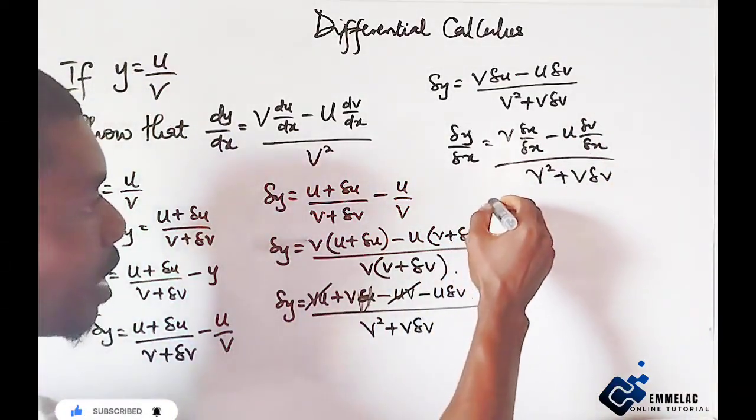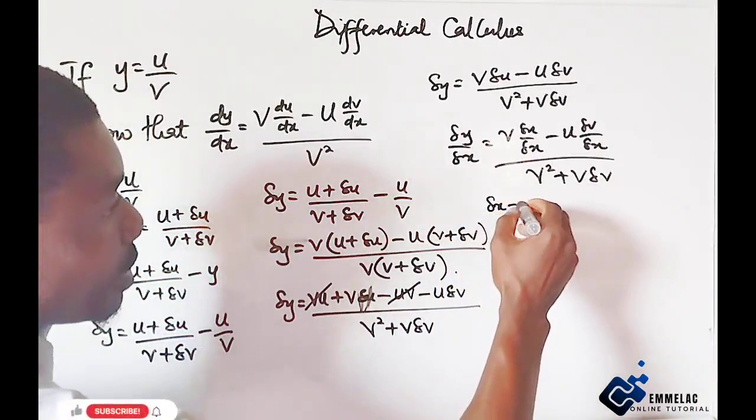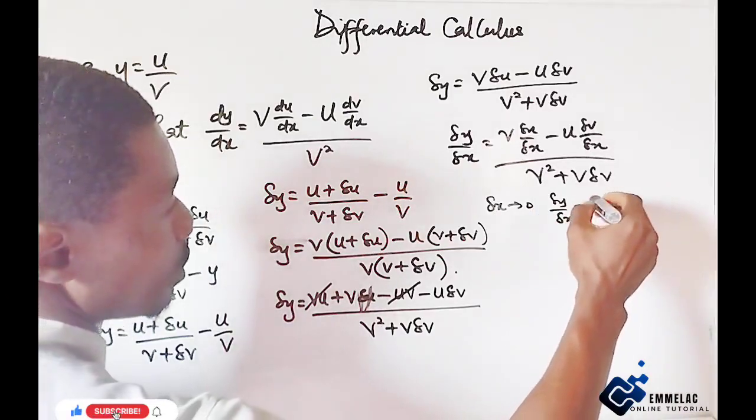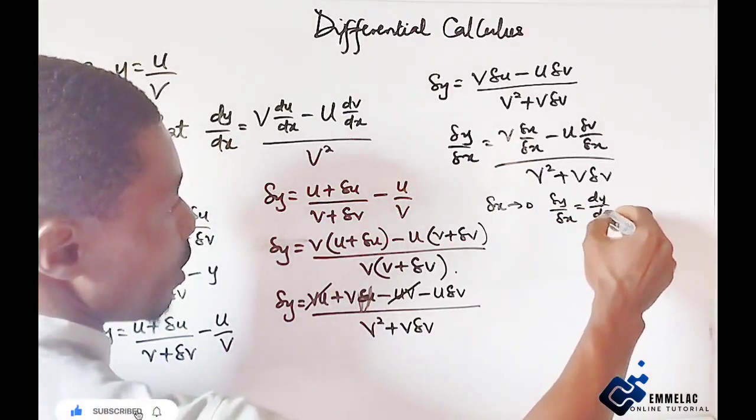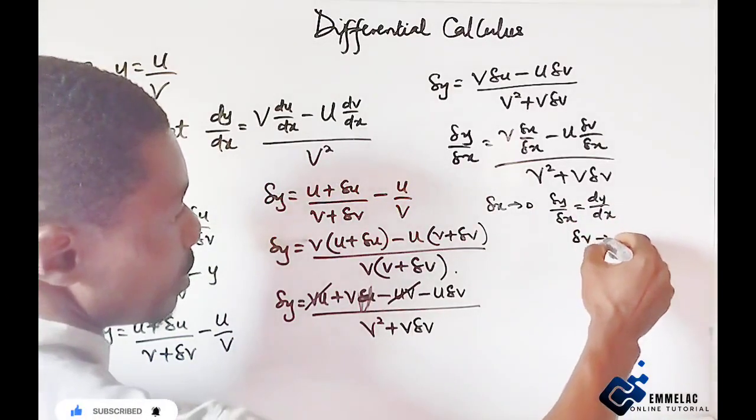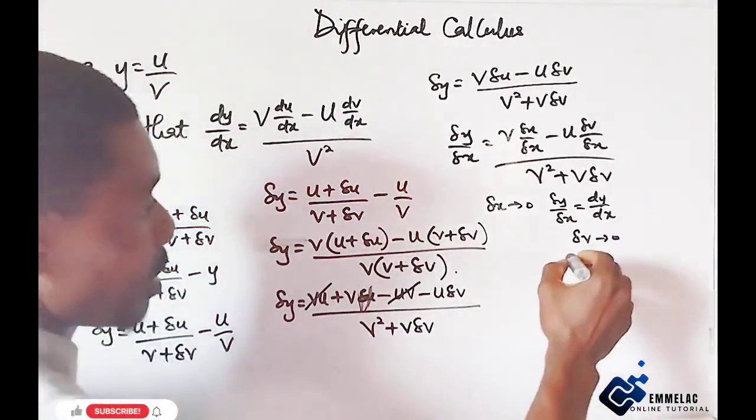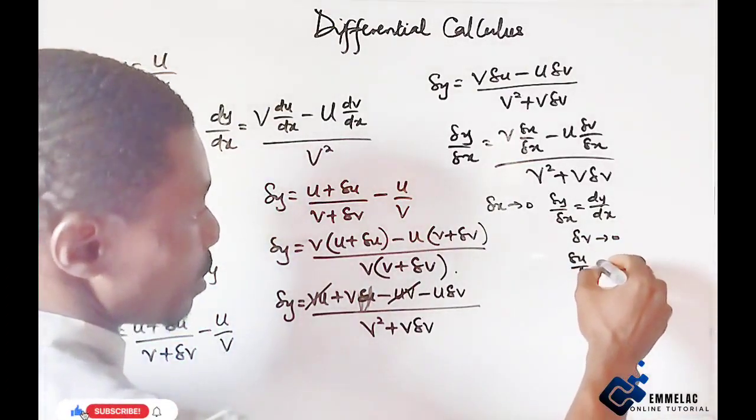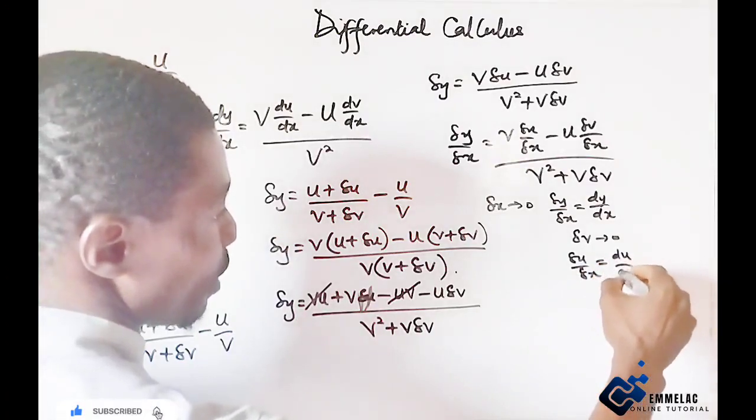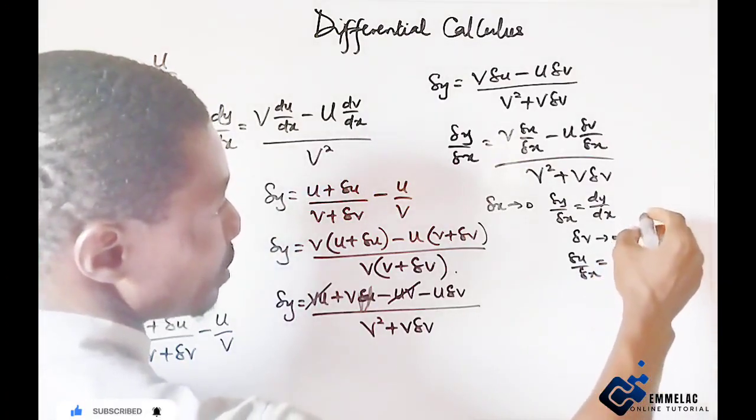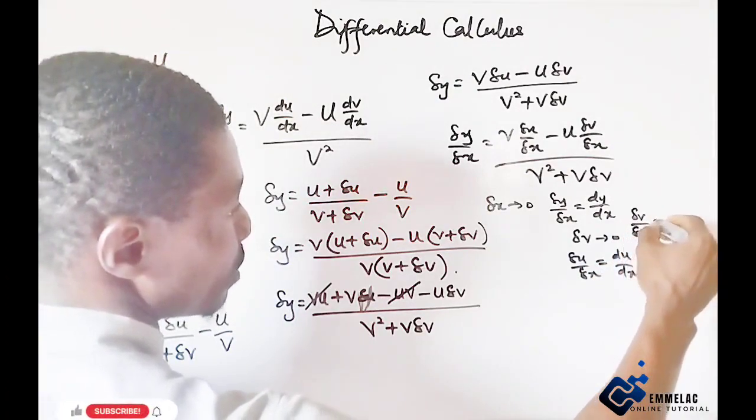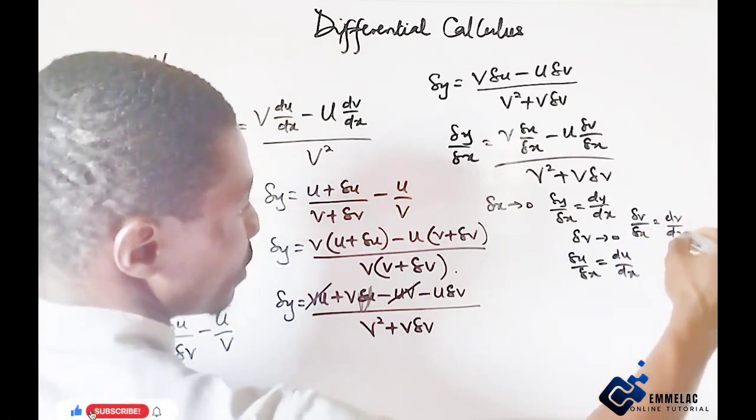So as change in x tends to zero, change in y over change in x equals dy over dx. And the dv equals to zero. And change in u over change in x tends to become du over dx, and same time change in v over change in x equals dv over dx.